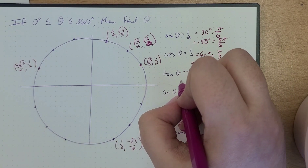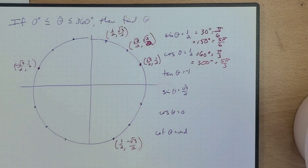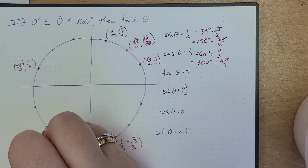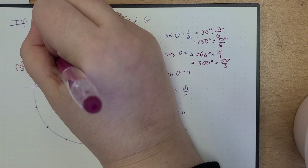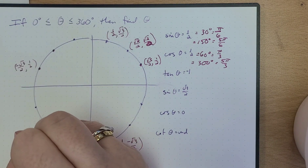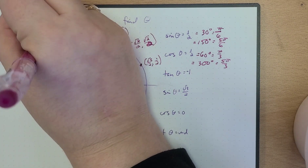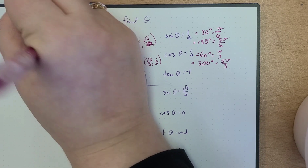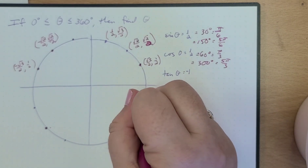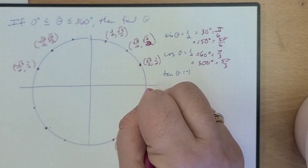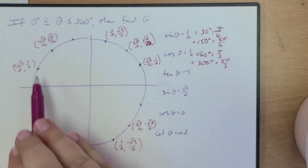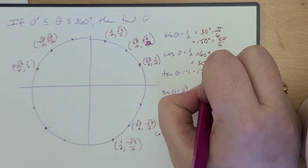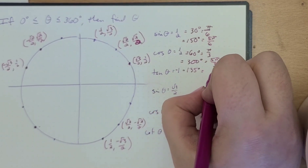So when is tangent negative one? We might remember that tangent is one when we have that √2/2. But when is that negative? Here it's going to be negative — here it would be a negative √2/2 comma √2/2, and here it will be a √2/2 comma negative √2/2. So here is where tangent will be negative. So what is this angle here? This angle here is 135 degrees, which is equal to 3π/4.